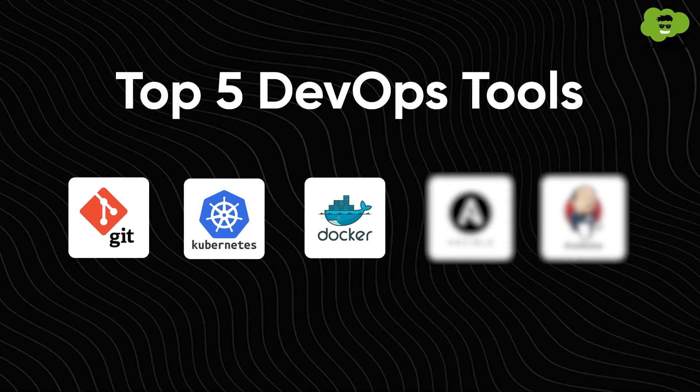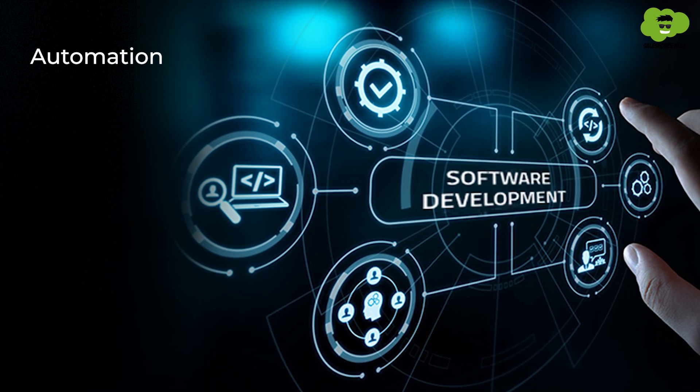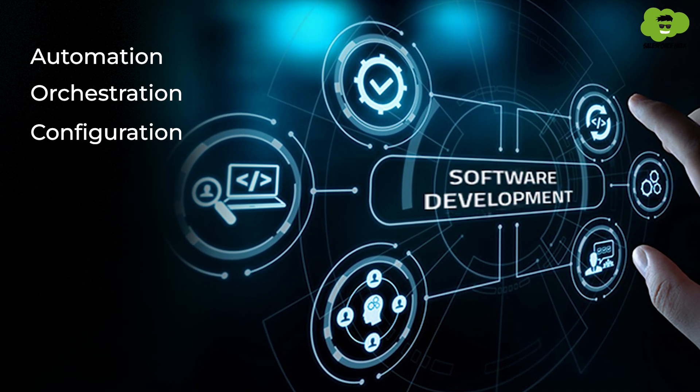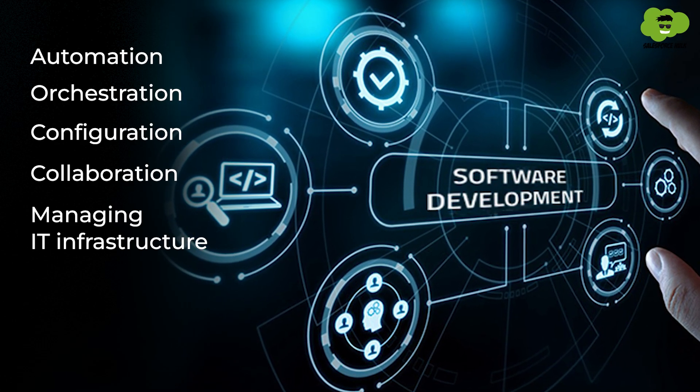Now let's talk about the fourth tool, Ansible. Ansible is an open-source DevOps tool that provides software-related services like automation, orchestration, configuration, collaboration and managing IT infrastructure. It helps in integrating and automating testing, performance handling, development and software deployment to accelerate productivity. Ansible is a solution that scales with demand and lets you focus on results, including the right and capable tools needed to deliver the desired results.